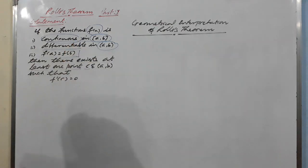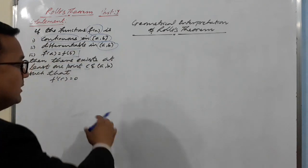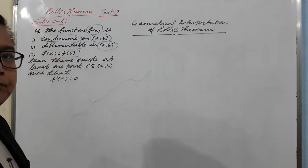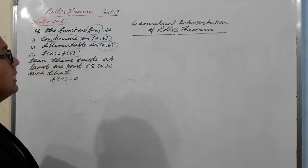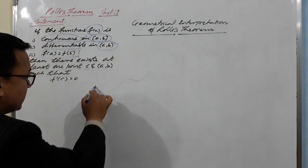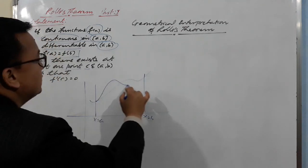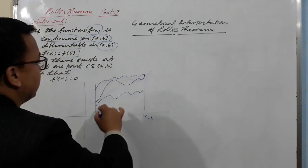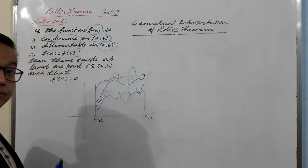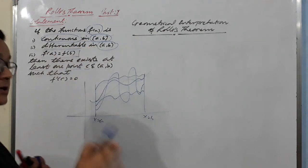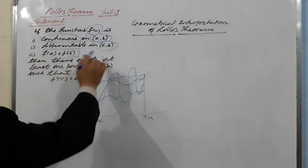If the function f(x) is continuous in the closed interval, continuous means we can draw the graph smoothly without any break — we can draw the graph very smoothly from a to b. So continuous means the function has a smooth, continuous graph in the closed interval [a, b], and you can draw it without lifting a pen or pencil.